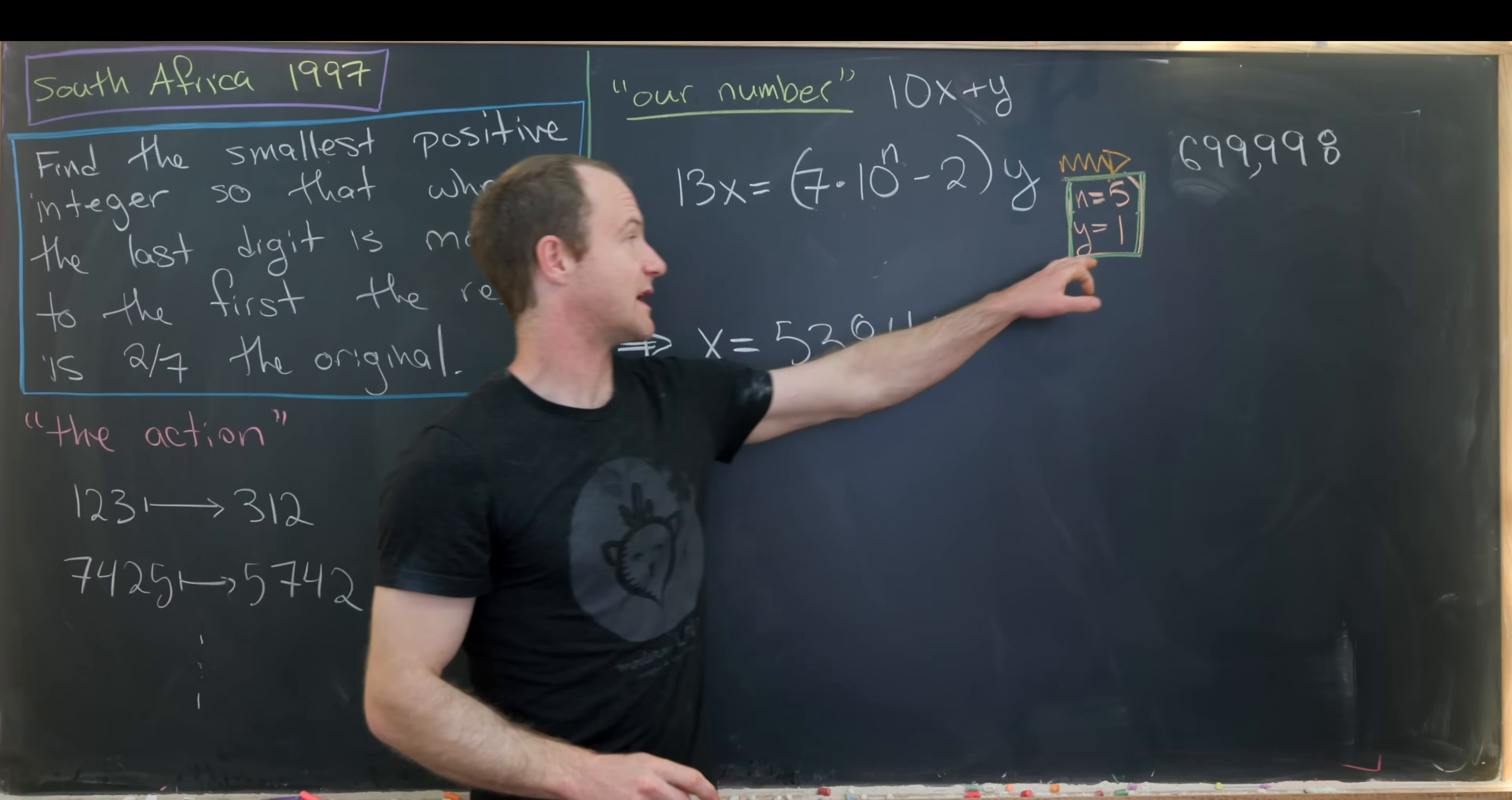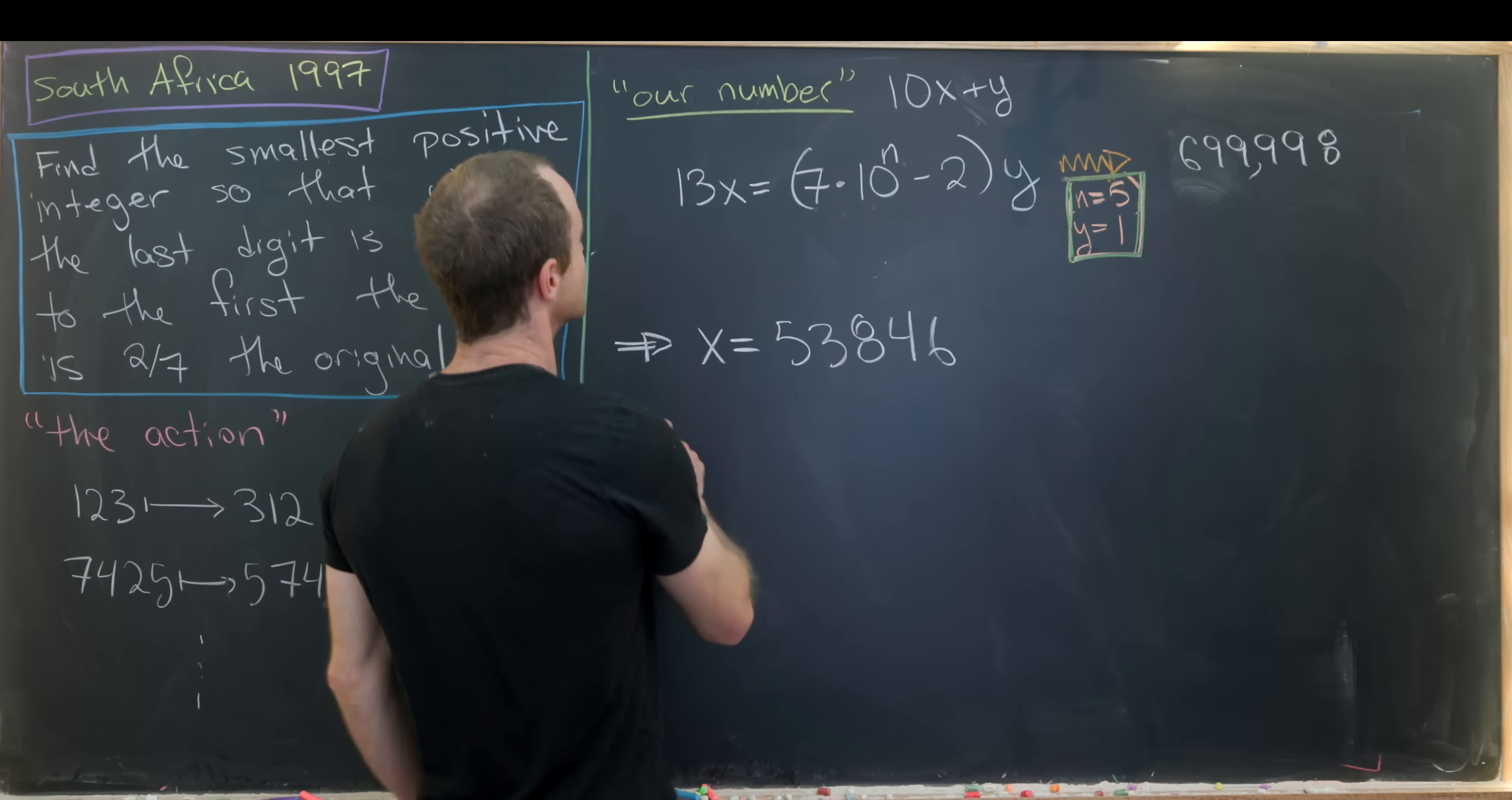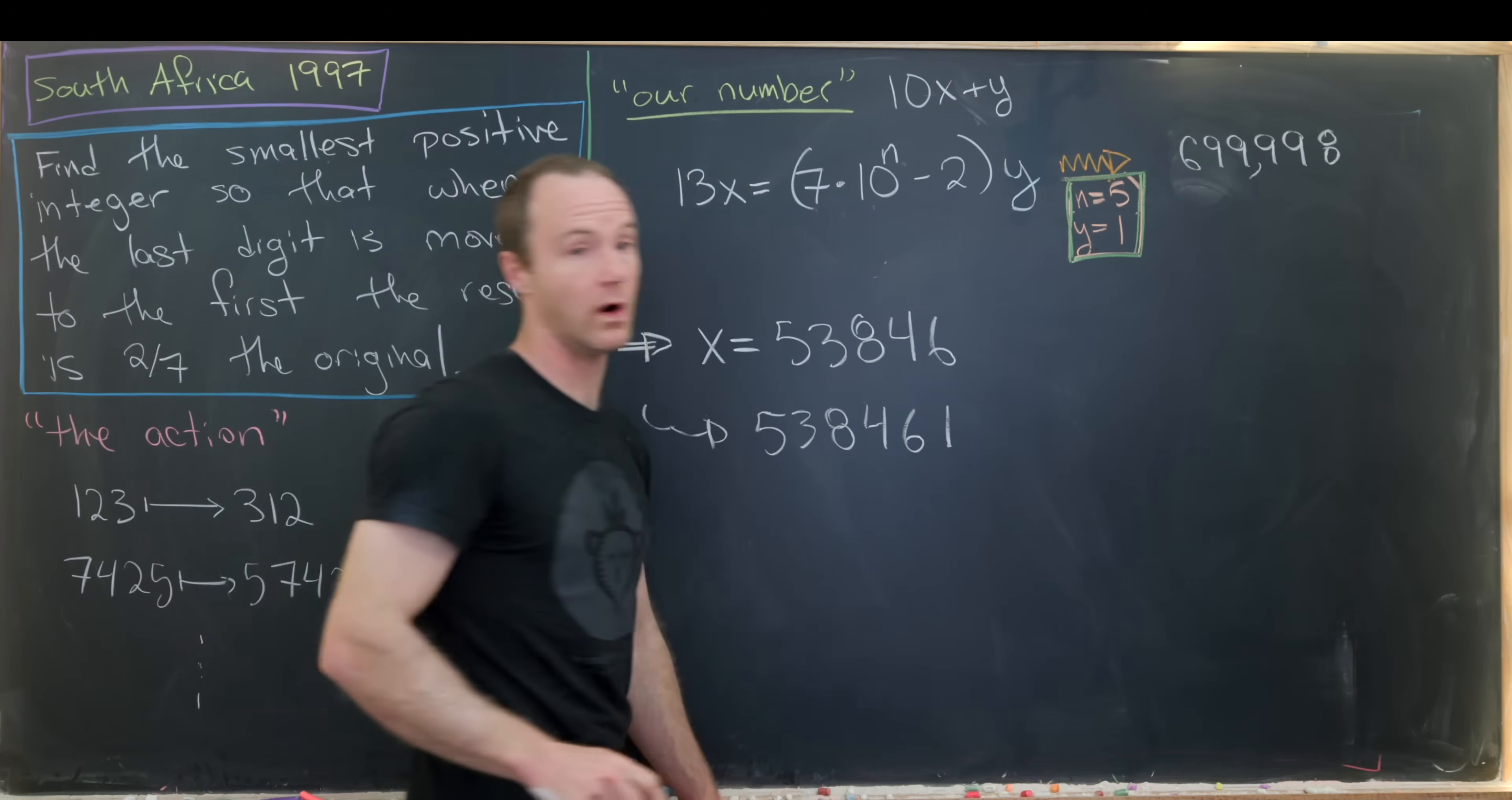And then since we have y is equal to 1, we can easily calculate our number x is 5, 3, 8, 4, 6, 1.